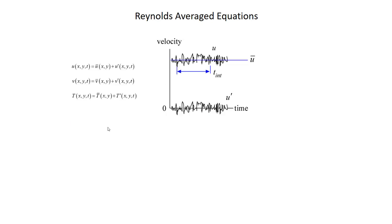We're going to express velocity as the sum of the averaged velocity and the fluctuating component. So u equals ū plus u-prime: ū is the time-average, and u-prime is the fluctuating component that fluctuates above and below zero. Same thing for v: v equals v̄ plus v-prime, where v̄ is the steady component and v-prime is the fluctuating part — the fluctuations in v and u are about the same magnitude even though v̄ and ū differ greatly. We do the same for temperature: T equals T̄ plus T-prime.